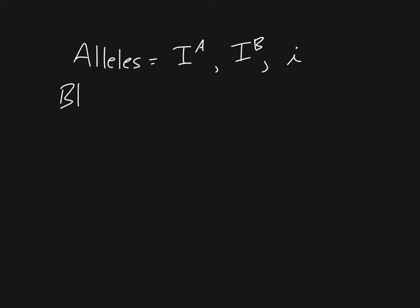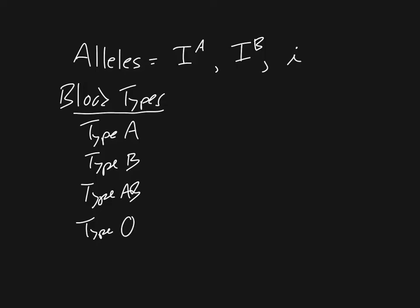Now also remember that these alleles can combine or pair up to give us four different blood types. Type A, type B, type AB, and type O.